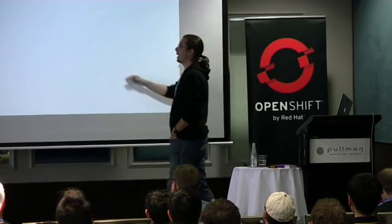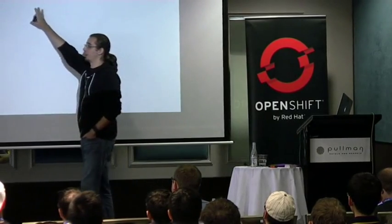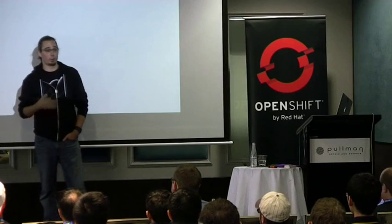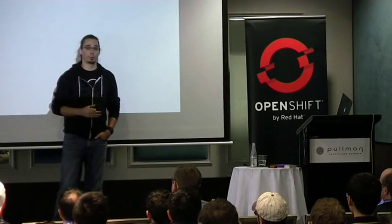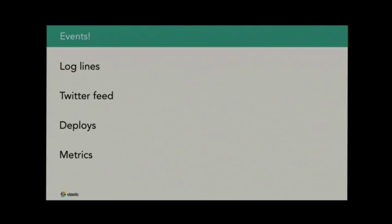We do have log lines, and we're very familiar with those — whenever you ran an Apache web server or anything else, you probably had to look into the logs to figure out what's going on. There is also the Twitter feed, but there is also a more important part: we can combine logs from multiple sources and not just technical sources. Those are useful too — if you can combine logs from your web server and from your load balancer and from your database, that's great. You get a lot of information that way.